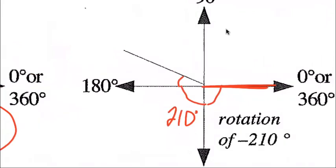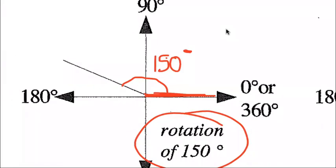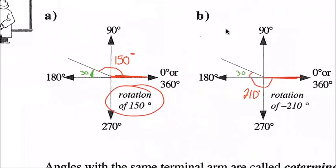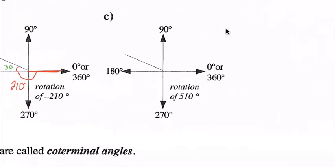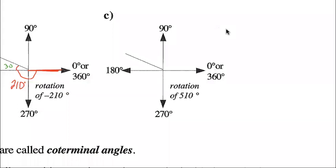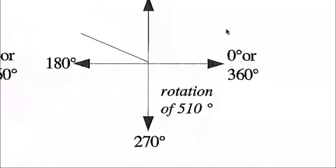We know this last part is 30 degrees because 180 plus 30 is 210. Going back to question A, from 150 continuing to 180 is also 30 degrees. For part C, a rotation angle of 510 degrees: starting at the initial arm, go all the way around once — that's 360 — add 90 more to get 450, then add 60 more to get 510. The reference angle is still 30 degrees.